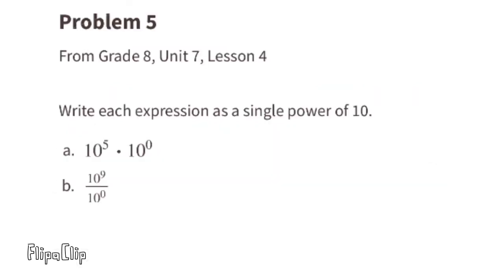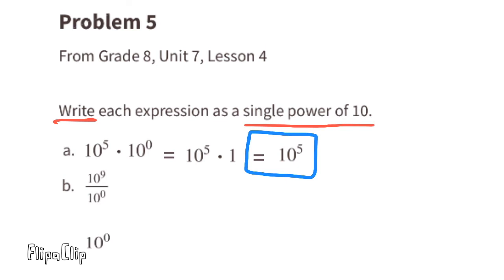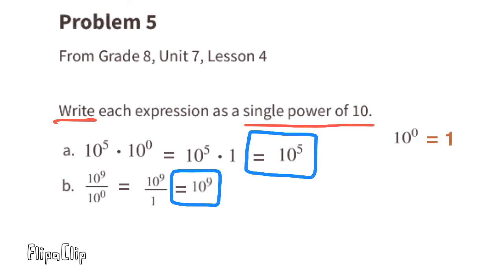Problem number five from 8th grade Unit 7, Lesson 4: write each expression as a single power of 10. Part a: 10 to the power of 5 times 10 to the power of 0. Since 10 to the power of 0 equals 1, this is 10 to the power of 5 times 1, which equals 10 to the power of 5. Part b: 10 to the power of 9 over 10 to the power of 0. Since 10 to the power of 0 is 1, this is 10 to the power of 9 over 1, and anything divided by 1 is itself, so the answer is 10 to the power of 9.